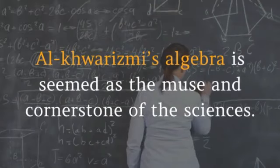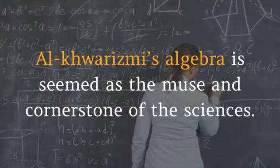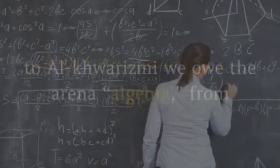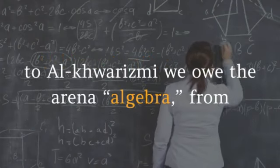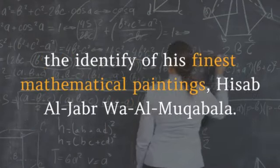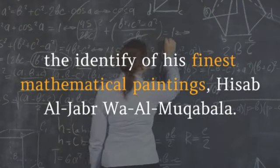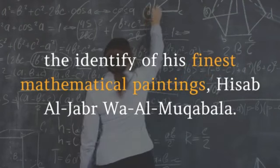Al-Khawarizmi's algebra is seen as the foundation and cornerstone of the sciences. To Al-Khawarizmi we owe the word algebra, from the title of his greatest mathematical work, Hisab al-Jabr wa al-Muqabala.